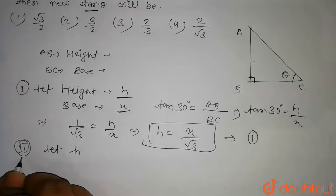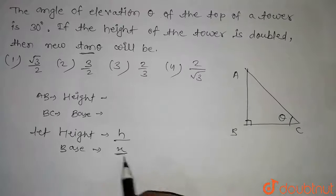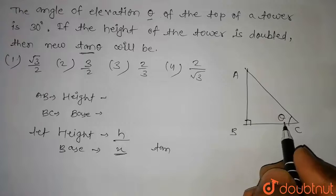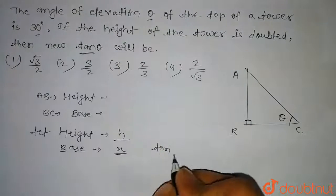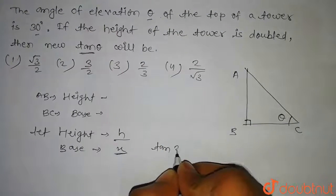So for the first case, we have height is h and base is x. And here in the question it is given that the angle of elevation theta of the tower is 30 degrees. So we have this angle theta equal to 30 degrees.